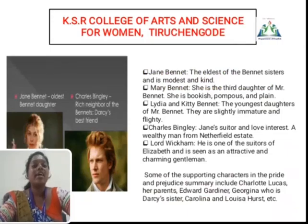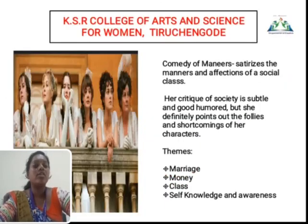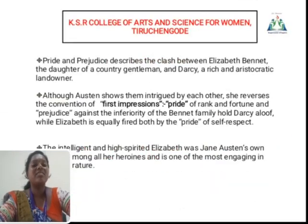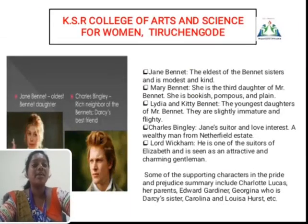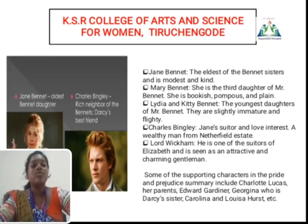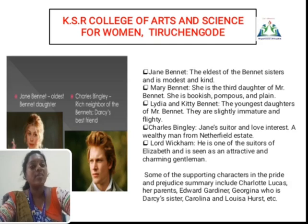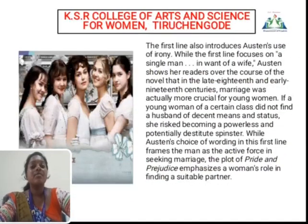As you can see in the picture, there are five daughters. The first daughter's name is Jane Bennet, the second is Elizabeth Bennet, the third is Mary Bennet — she is the third daughter of Mr. and Mrs. Bennet — and the fourth and fifth daughters are Lydia and Kitty Bennet. These are very important characters. Charles Bingley wants to marry Jane Bennet; he is a very wealthy person. Charles's friend Darcy is also a very wealthy and young man. Many major and minor characters are also available in this novel.